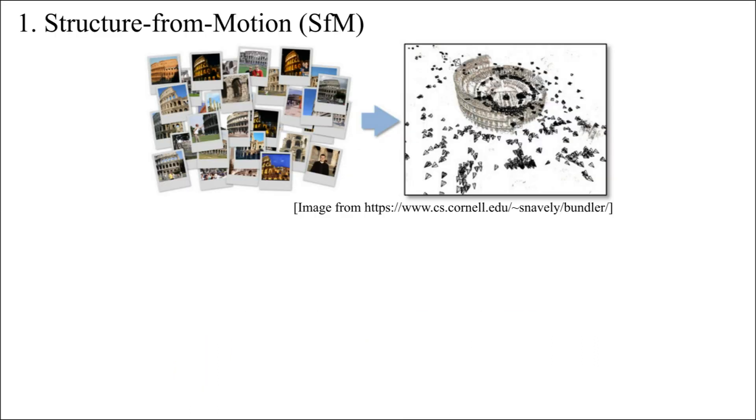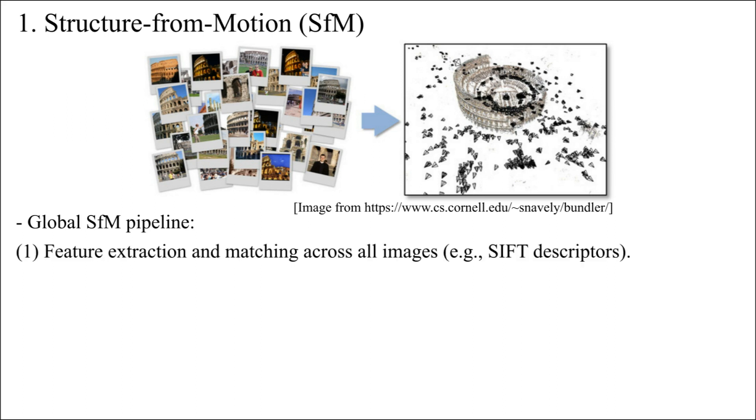Structure from motion means reconstructing the camera poses and the scene structure from a list of unordered images. Usually, the global SFM pipeline consists of the following steps. First, feature extraction and matching across all images using, for example, SIFT descriptors.